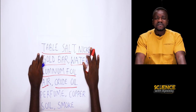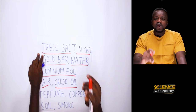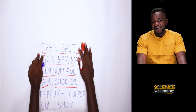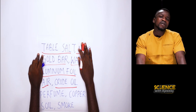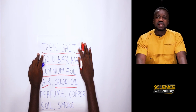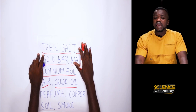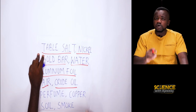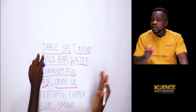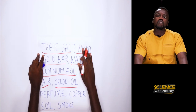I believe we've learned something new today — elements, compounds, and mixtures. Before I go, there are also several types of mixtures. We have the heterogeneous mixture and the homogeneous mixture. When you have a solvent and a solute and they dissolve completely — like salt and water — and they look the same even until you taste it, that is a homogeneous mixture.